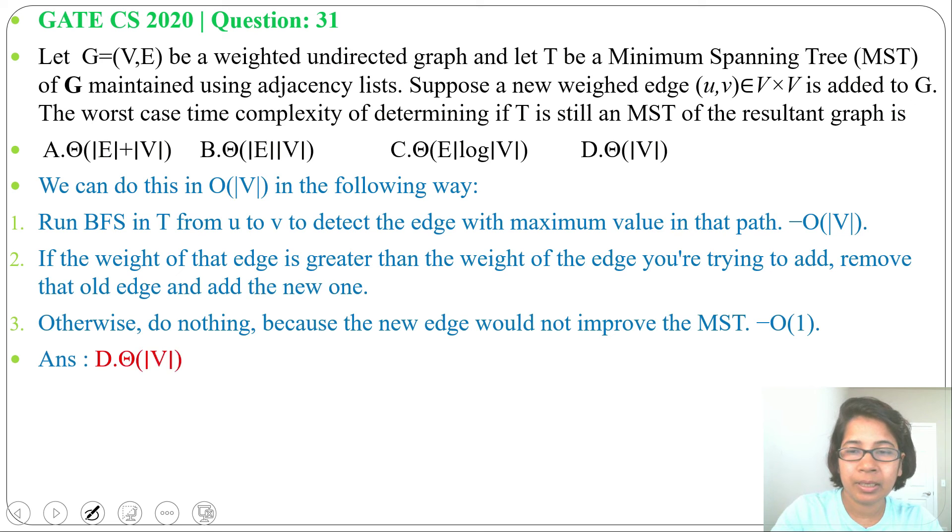So answer is option D, theta of number of vertices. So whatever edge you are adding, if that weight is higher than weight of the minimum spanning tree edges, then there will be no change. If it is less than edges of the minimum spanning tree, then we'll change the minimum spanning tree. I already discussed minimum spanning tree, just go through that. And if this lecture is helpful for you, please like, share and subscribe. Thank you.